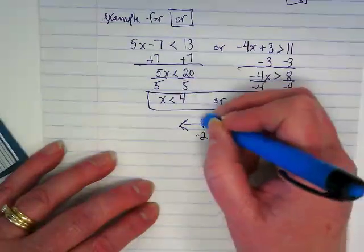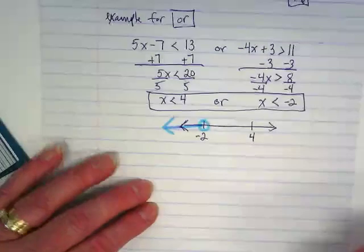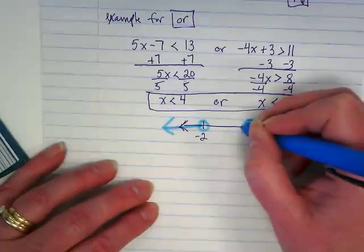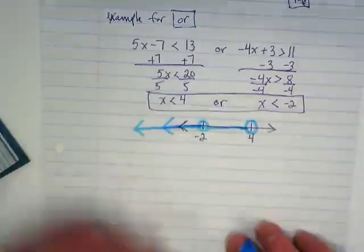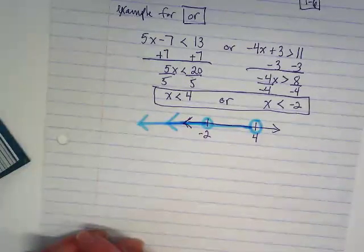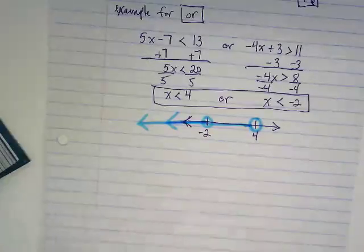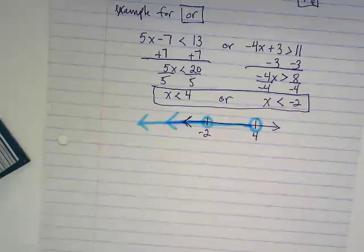So if I do the negative 2 first, it's going to the left. If I do the 4, the x also goes to the left. So this or inequality crosses over the other. It's a rare or inequality, but it does happen. Usually they go opposite directions. Occasionally they both go the same direction.